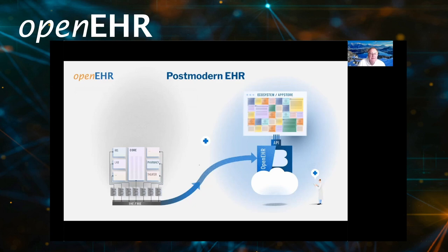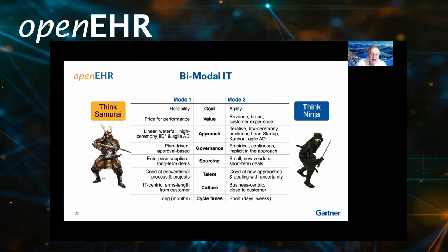This is very much in line with what Gartner was talking about when they introduced the bimodal IT concept: mode one running the business — reliable, slow-changing — and mode two, where you can take advantage of new innovations and quickly build apps and applications. What we are saying is that in order to do that, this innovation shouldn't recreate the same problem we have with legacy, which is that each application stores data differently. So these apps and applications should be built on top of an innovation platform that shares the same vendor-neutral data.